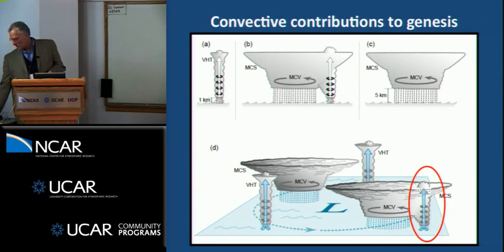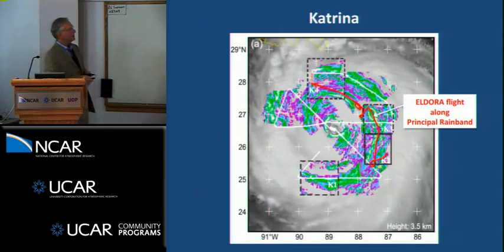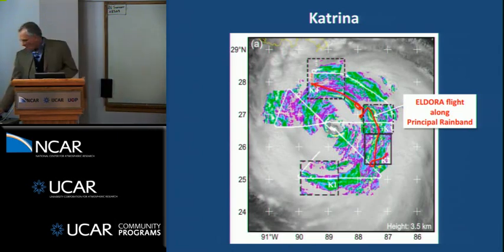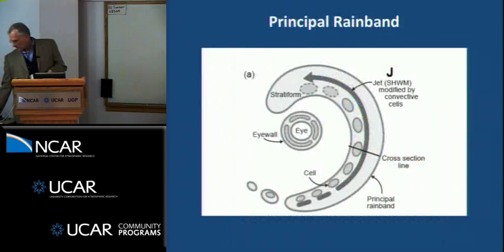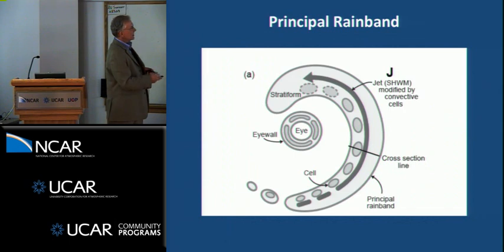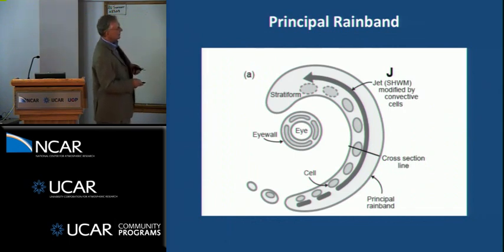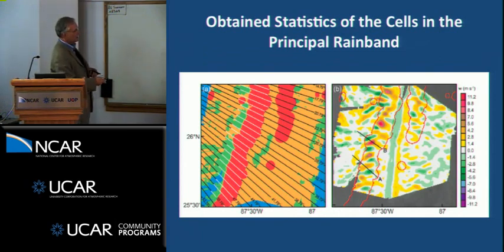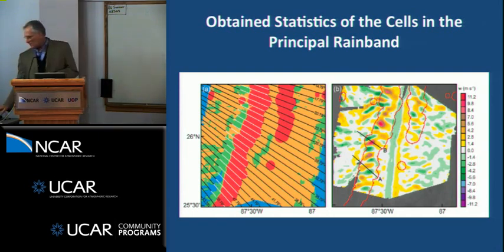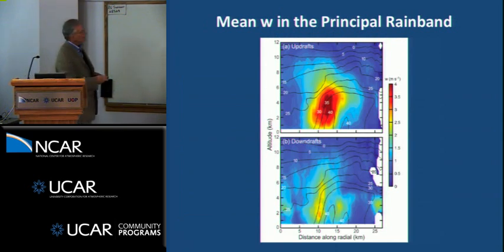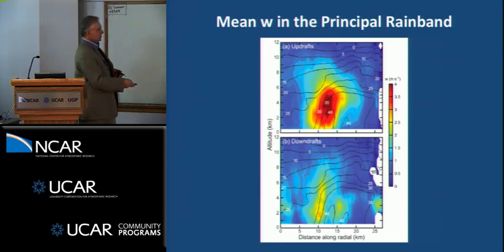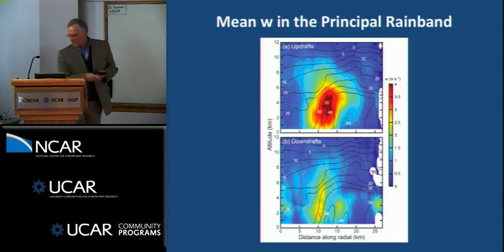Katrina gave us a good look at a principal rain band. The Eldora flew along the center of the band and got very detailed information about it. Schematically, these principal rain bands have a jet that runs more or less along their middle section, with a lot of intermittent cells along the band. This shows the alternating up and down structures along the principal rain band. Averaging the updrafts and downdrafts along the band reveals three features: a strong updraft associated with the reflectivity, a downdraft in the precipitation zone, and one on the inner edge — which we call the inner edge downdraft.